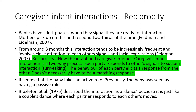Looking at caregiver-infant interactions, we'll first look at reciprocity. Babies have these things called alert phases — this is when they signal that they're ready for interaction. They might start waving an arm and demanding to be picked up, and then mothers have to look for these signals. Feldman and Eidelman in 2007 note that mothers respond to these alert phases two-thirds of the time. From around three months, this interaction tends to be increasingly frequent and involves close attention to each other's signals and facial expressions.